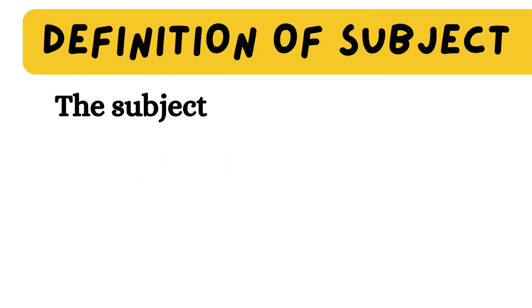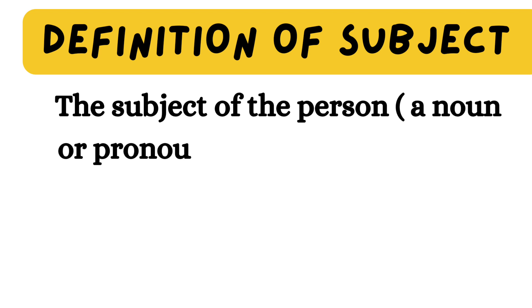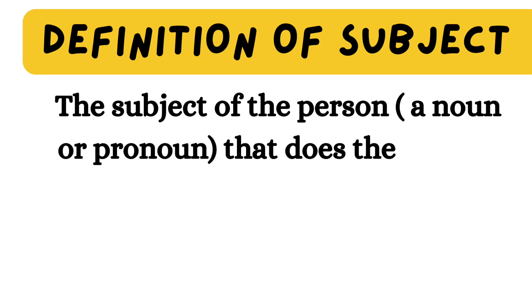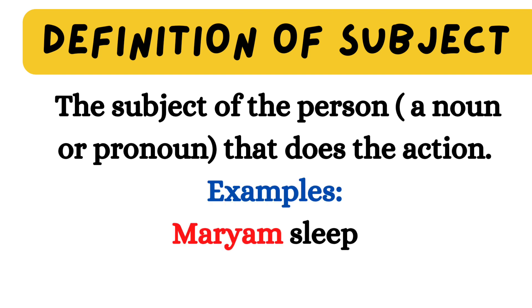First, the subject of a sentence is the person that does the action, and a person may be a noun or pronoun. Take the sentence: Mariam sleeps. Mariam is the subject here, and also a noun. She sleeps — she is the subject and a pronoun. The name Mariam is replaced by she because a pronoun is used as the replacement of a noun.